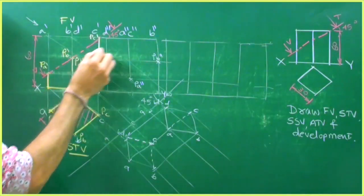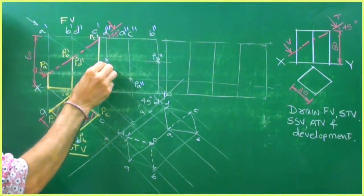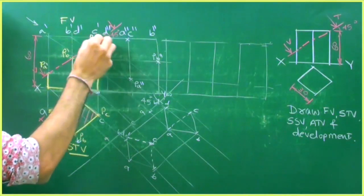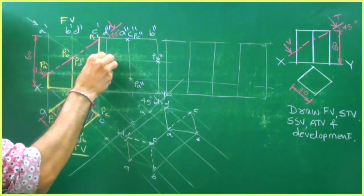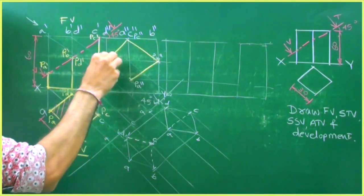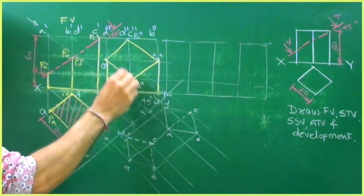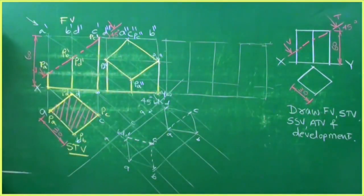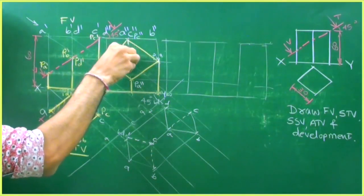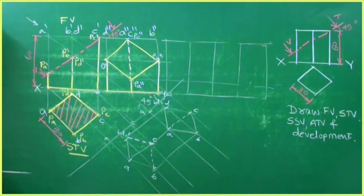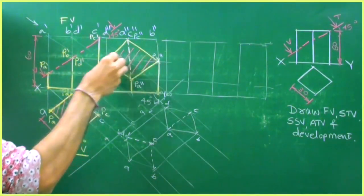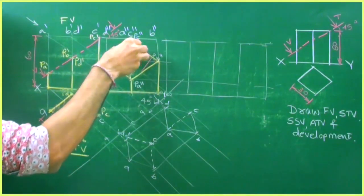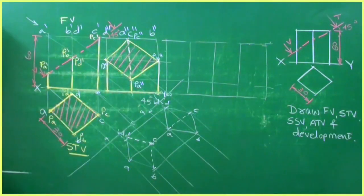Extend from Pb double dash — that is Pb double dash — and from D double dash, wherever it cuts is Pd double dash. From C double dash, wherever it cuts is Pc double dash. Join this. Whatever is drawn with yellow chalk will be dark. We can show the behind line as dotted because you can't see that edge, and this inclined line will be the hatching lines. This is the sectional side view.